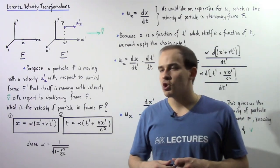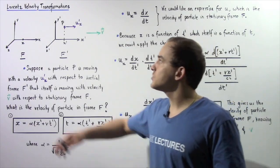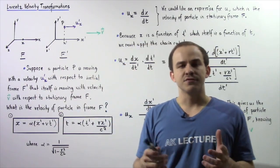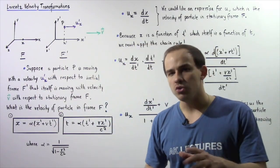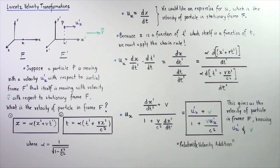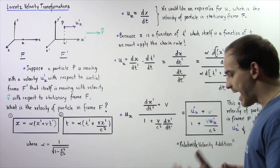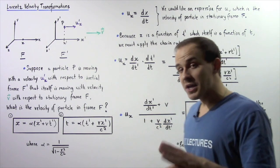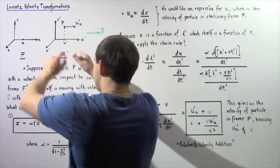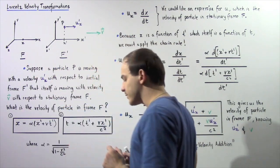In this lecture, we're going to discuss Lorentz Velocity Transformations, also known as Relativistic Velocity Addition. Let's begin by looking at the following diagram.